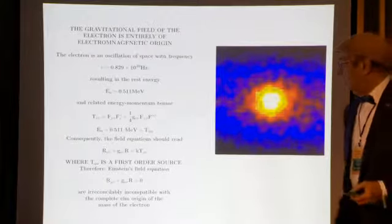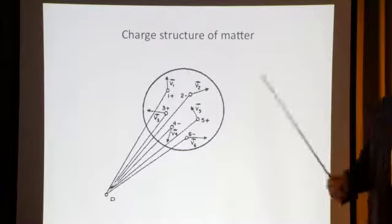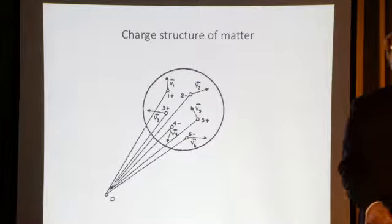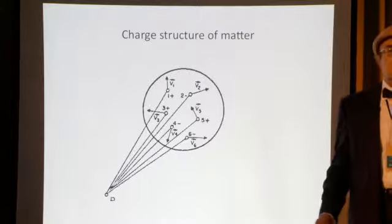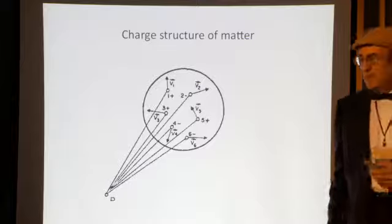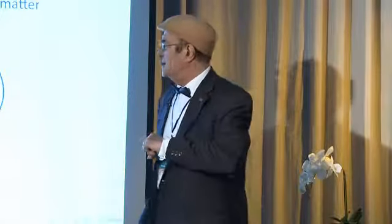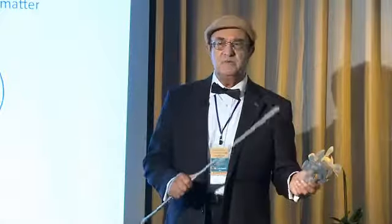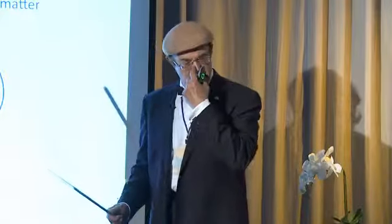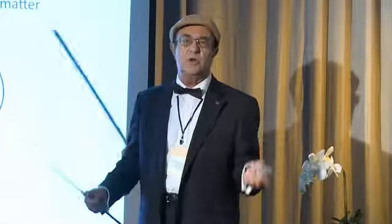Einstein's equation must be complemented on the right hand side with the source tensor as expressed in this equation, which is however first order in magnitude. This is a fundamental point. Now at this point, everybody will say, oh but okay, the electron, because it's an isolated charge. But when we have a large mass in which the charge is zero, then the electromagnetic contribution to the mass is ignorable because the charges are opposite. In other words, the argument is that since the charge is zero, this means there are an equal number of positive and an equal number of negative charges that they annihilate each other.